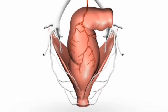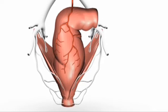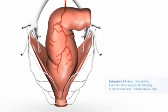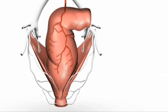A study published in 2008 showed that the superior rectal artery is in fact the only artery of any significance supplying the hemorrhoidal cushions. It can also be seen that the number of smaller arterial branches in the corpus cavernosum recti differ greatly from patient to patient.